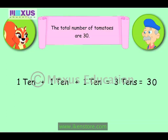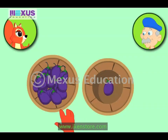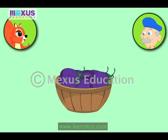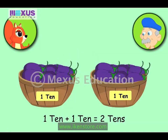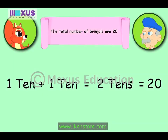Now I will count the number of brinjals by grouping them into tens. Sure, Amber, go ahead. To start with, I will put ten brinjals in one basket. One, two, three, four, five, six, seven, eight, nine, ten. The number of brinjals in this basket is ten, or one ten. Now ten brinjals are left behind. One ten plus one ten is two tens. I will add a zero after two to find the number of objects. So the number of brinjals is twenty.